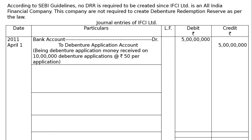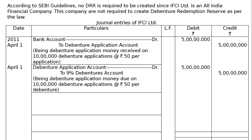Then the due entry on the same day: Debenture Application Account debited to 9% Debenture Account, rupees 5 crores — being debenture application money due on 10 lakh debenture applications at the rate of rupees 50 per debenture.